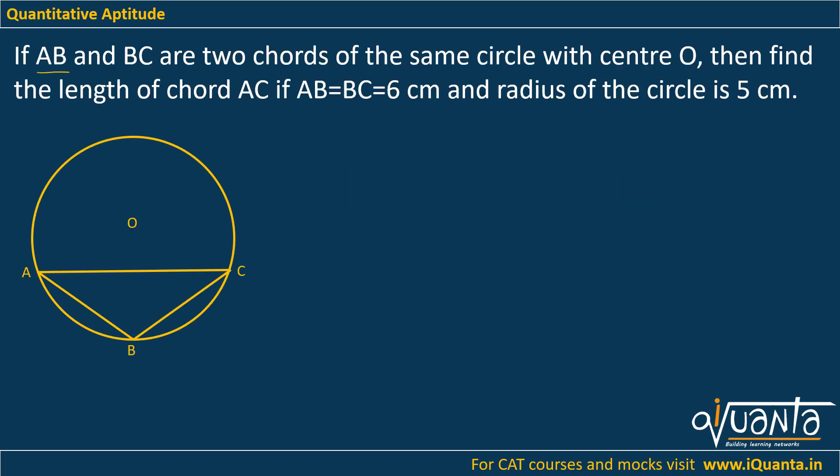The question is: if AB and BC are two chords of the same circle with center O, then find the length of chord AC if AB equals BC is 6 cm and radius of the circle is 5 cm.